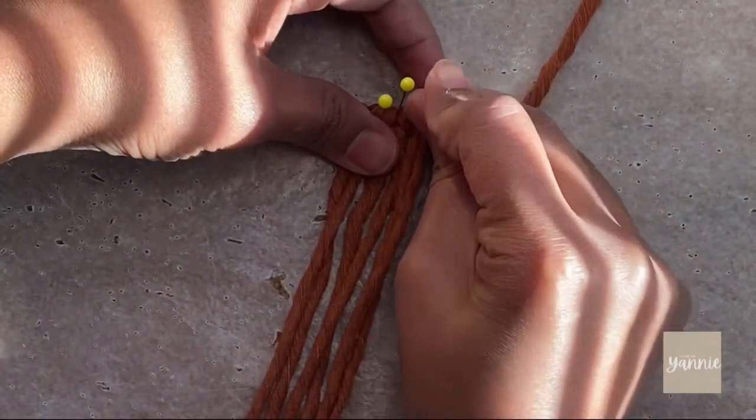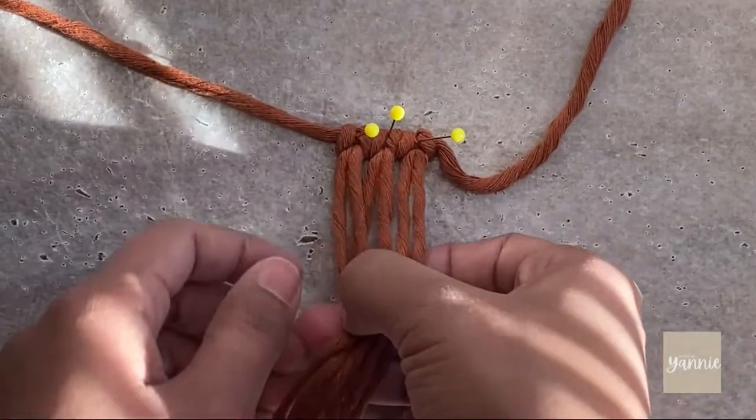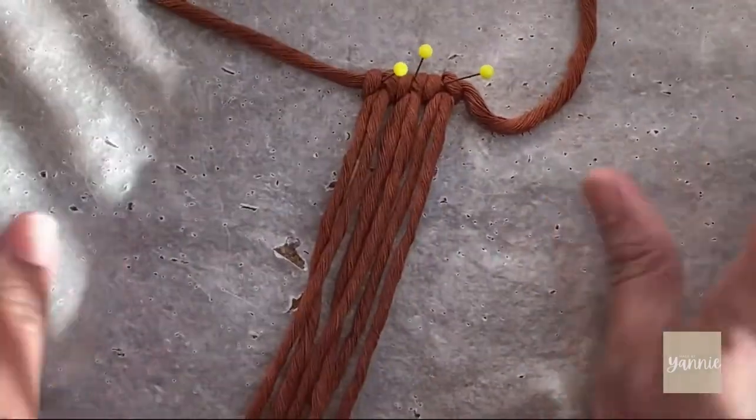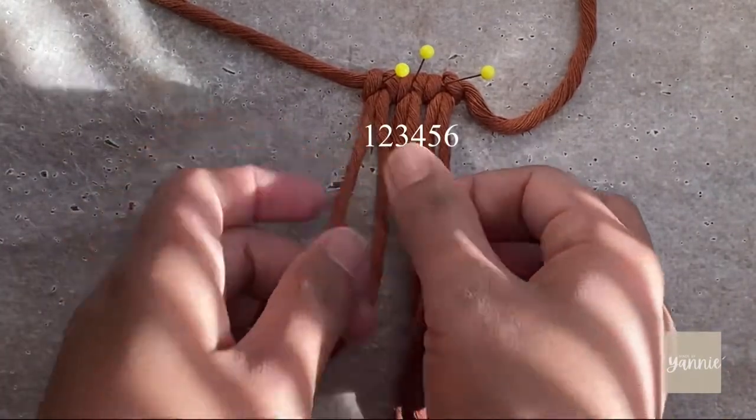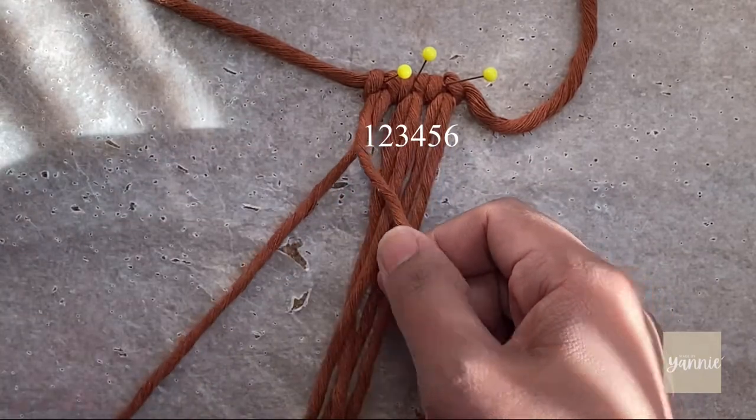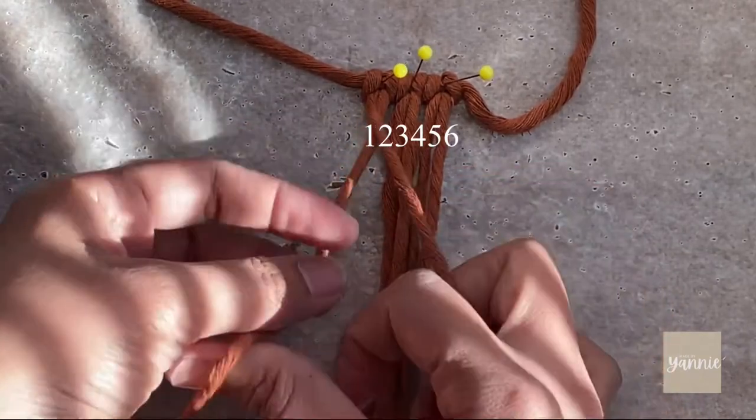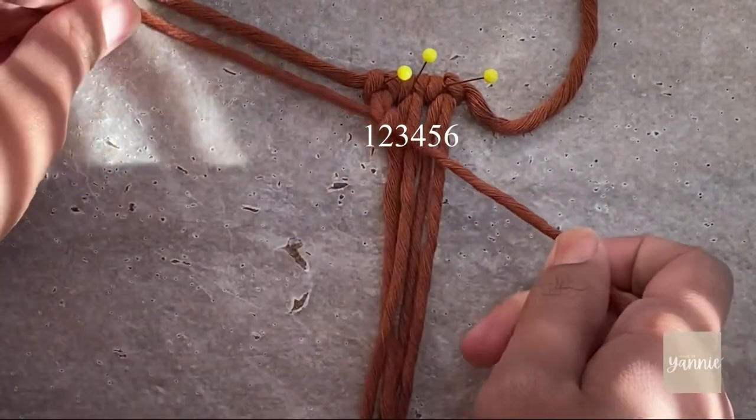We are going to do double half-hitch knots for this pattern. I have numbered the cords from one to six so it'll be easier. One and six will be our support cords and two, three, four, five will be our working cords. Place number one diagonally over two and three.